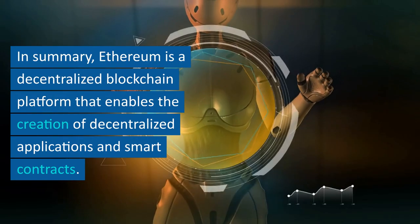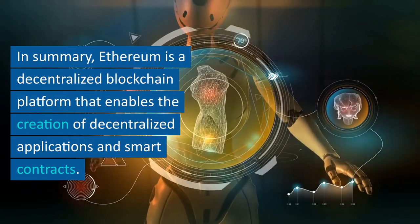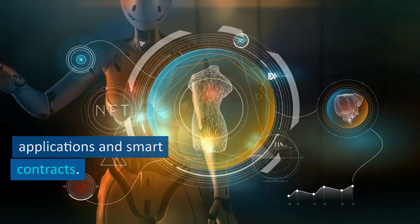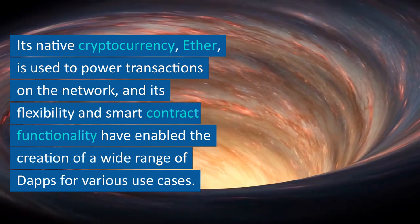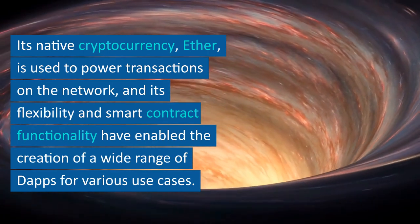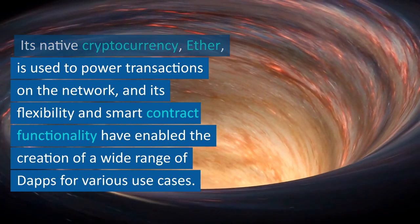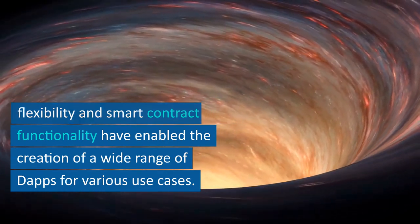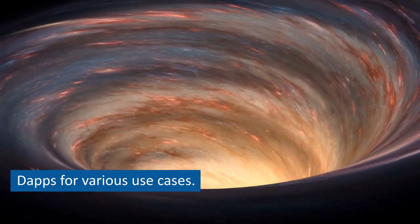In summary, Ethereum is a decentralized blockchain platform that enables the creation of decentralized applications and smart contracts. Its native cryptocurrency, Ether, is used to power transactions on the network, and its flexibility and smart contract functionality have enabled the creation of a wide range of dApps for various use cases.